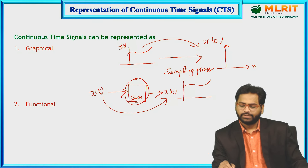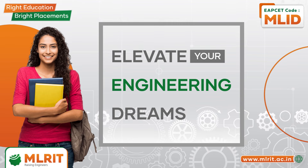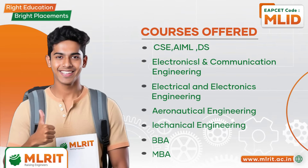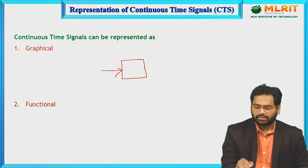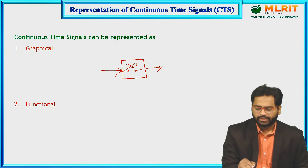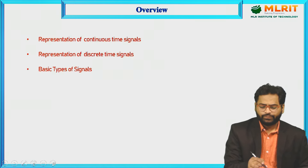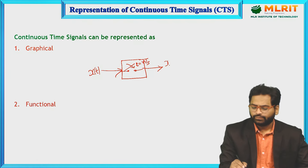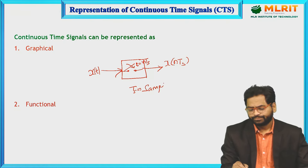This sampling circuit acts as a switch from input to output. Where t is there, I am substituting t = nTs, where Ts is the sampling time, also called the sampling interval.